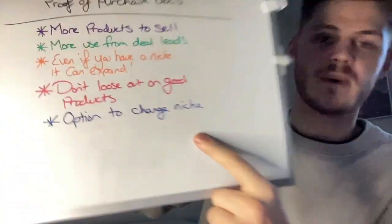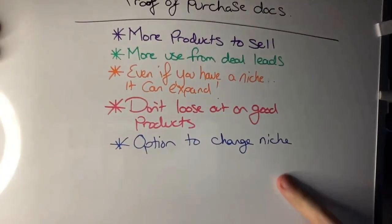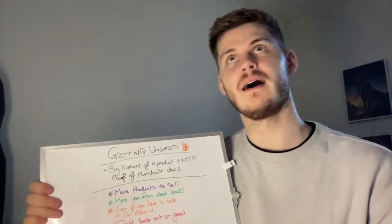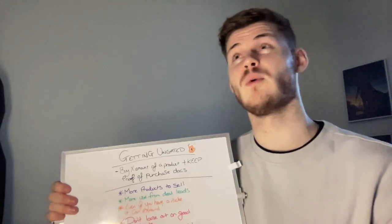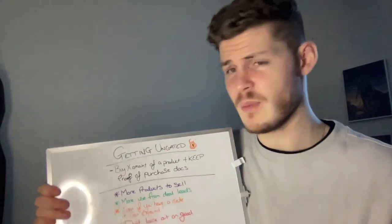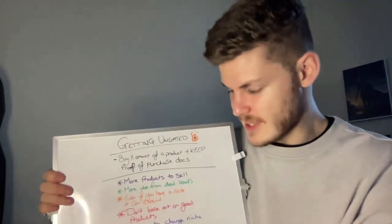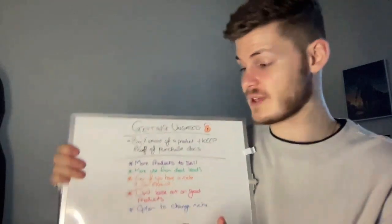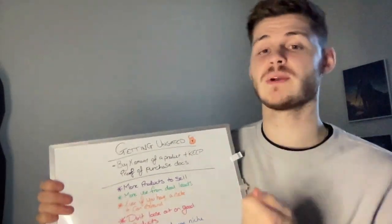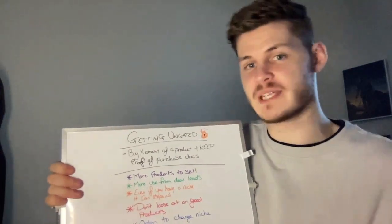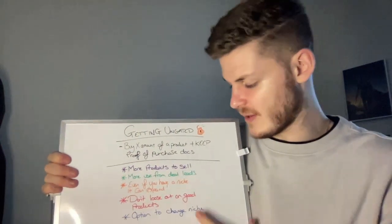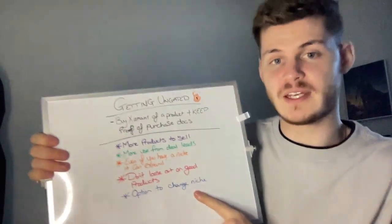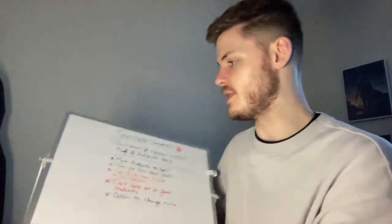You also have an option to change niche. Even if you want to focus on one particular niche, it might be that the niche you went with doesn't work out as well as you'd hoped. It might be doing okay, but you feel you could be doing a whole lot better. So you've got the option to change niche to whatever you want because you're ungated in every category. You might find you're doing a whole lot better focusing on that range of products. Being ungated just opens up the types of products and categories you can sell in and completely opens up the world of selling on Amazon with fewer restrictions.